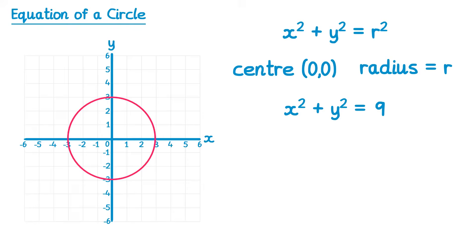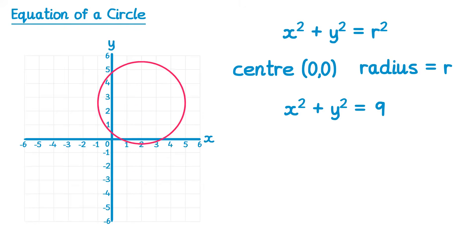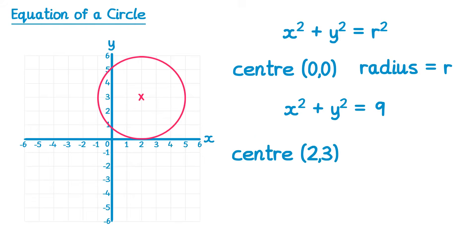Now what about if we move the circle so the center is in a different place? What would happen to the equation? In this one we've now got a center which is (2, 3) but the radius is still the same — it's still three. Since the radius is still the same, the right hand side of this equation doesn't change, so it still equals three squared, or equals nine, but the left hand side does.